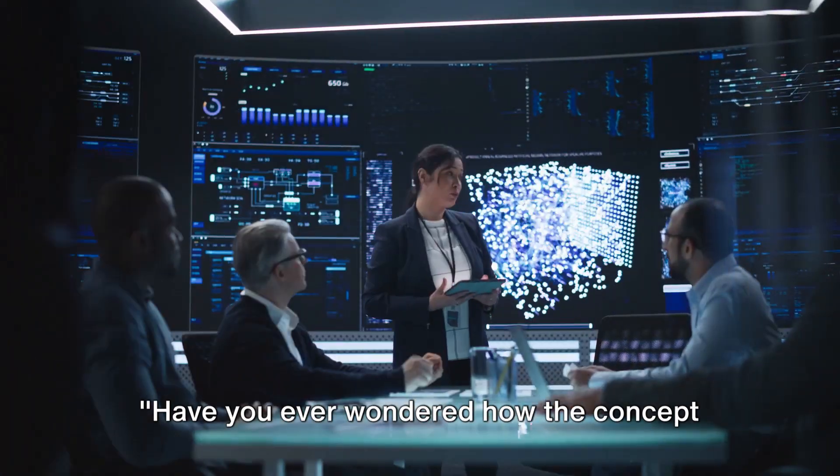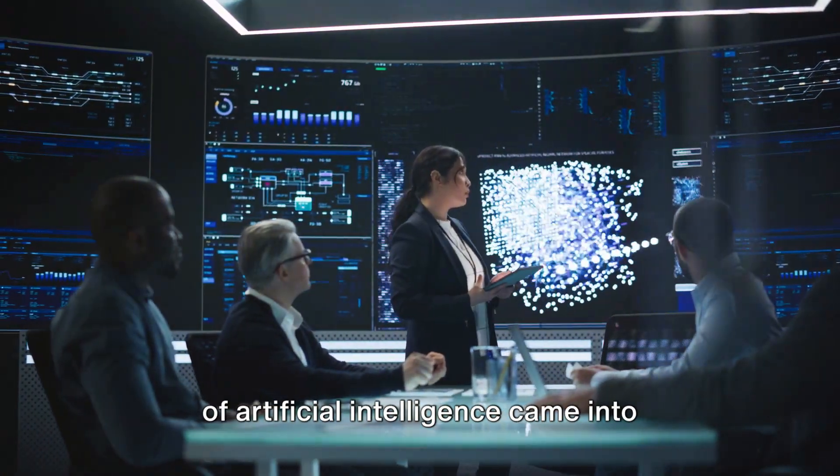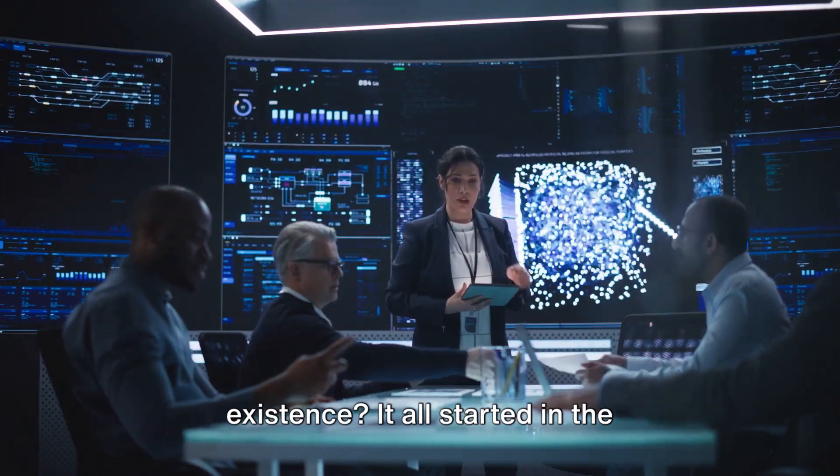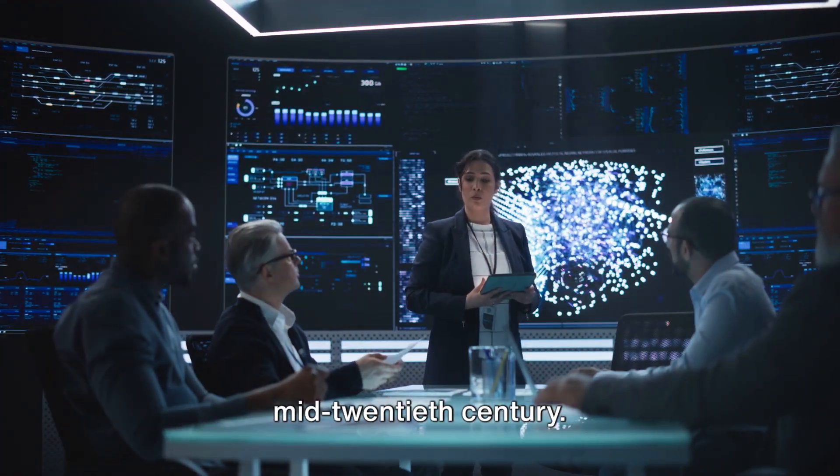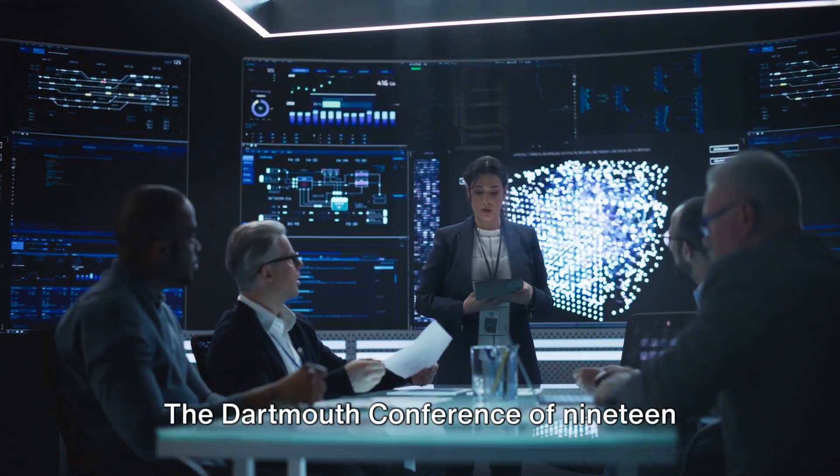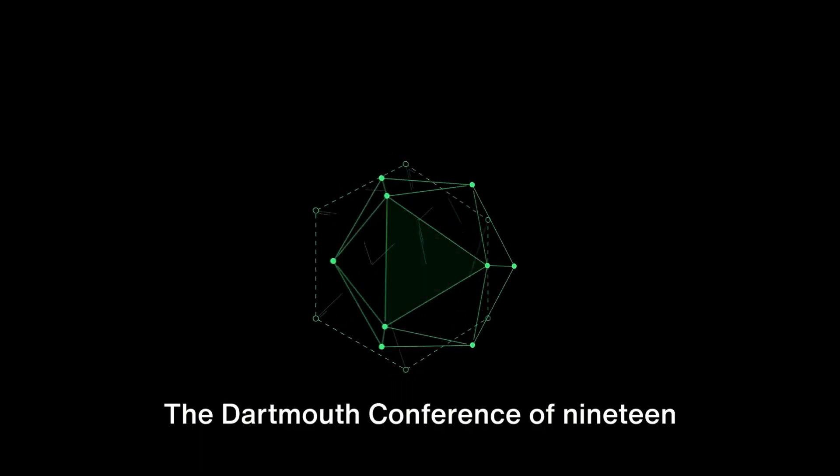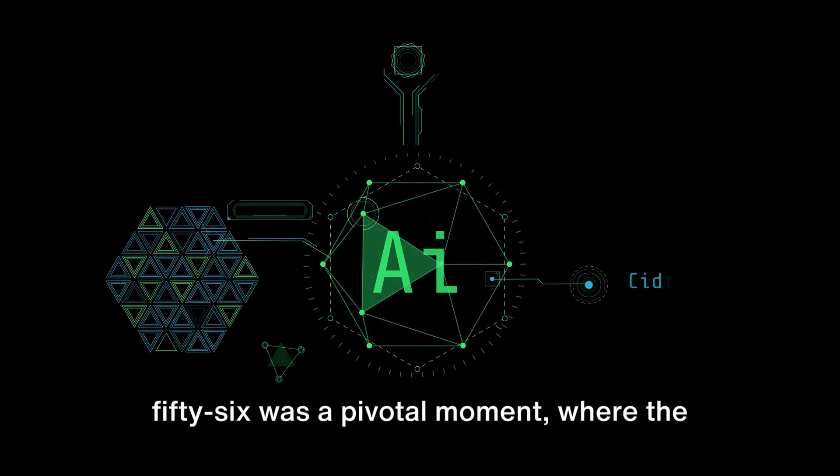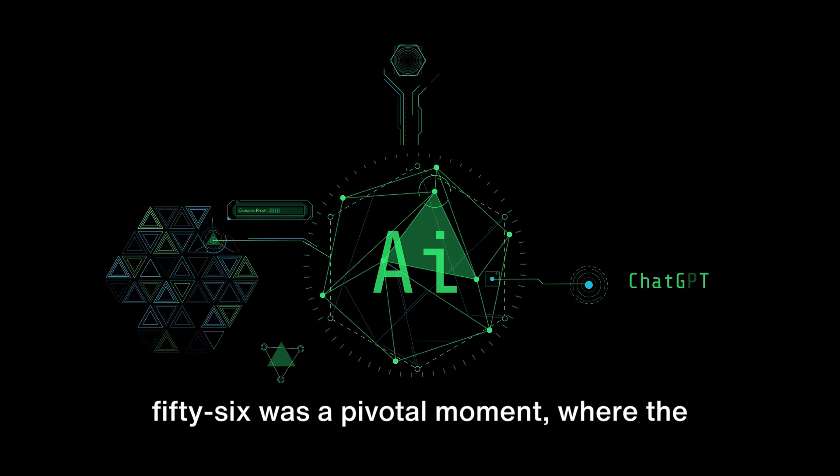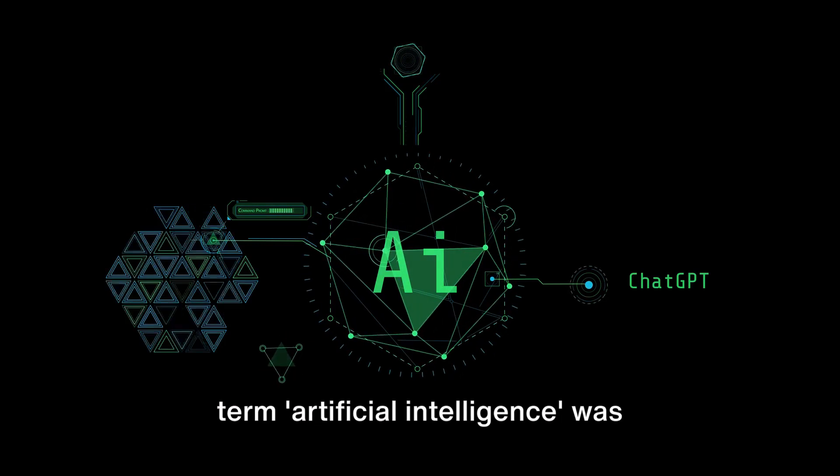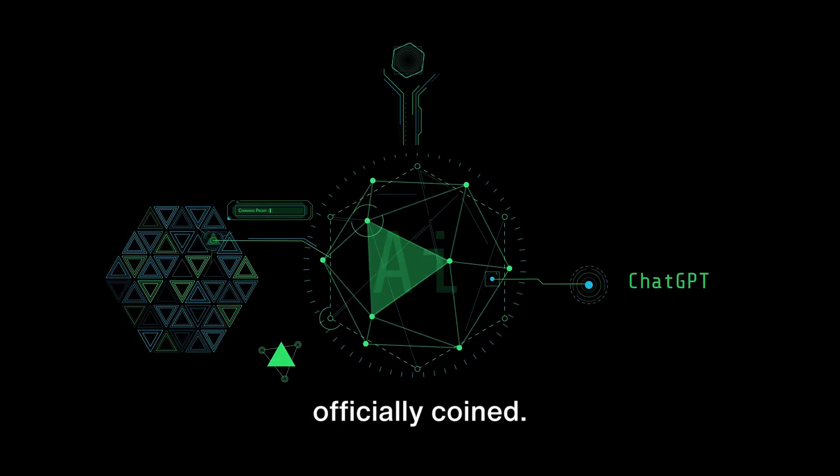Have you ever wondered how the concept of Artificial Intelligence came into existence? It all started in the mid-20th century. The Dartmouth Conference of 1956 was a pivotal moment where the term Artificial Intelligence was officially coined.